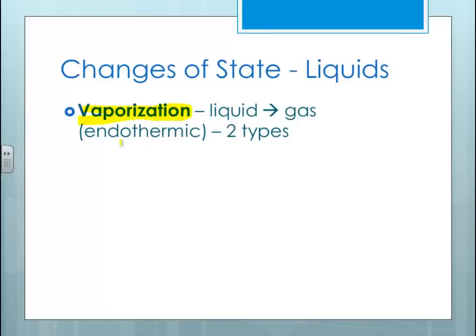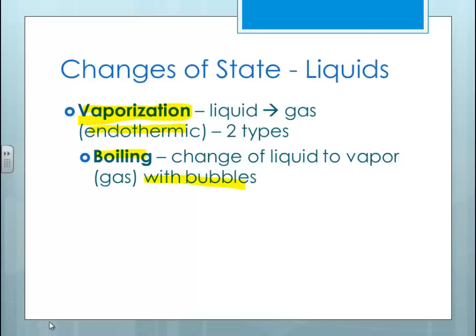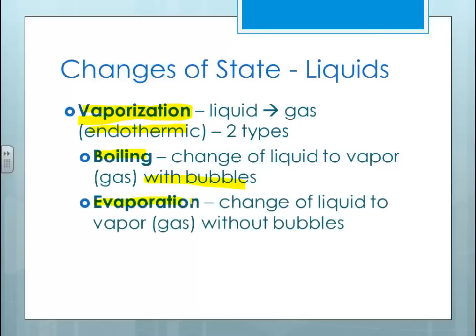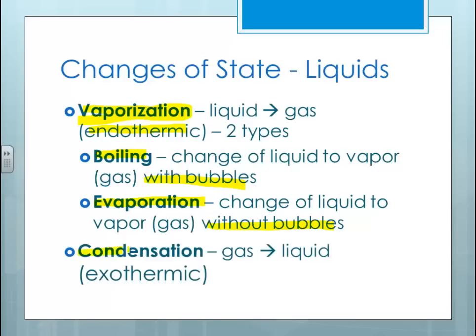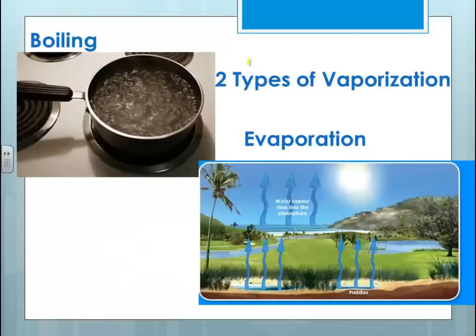Vaporization is when we go from a liquid to a gas — it is endothermic, and there are two types. Boiling involves bubbles, and evaporation is without bubbles. Both involve going from a liquid to a vapor or gas. The opposite is condensation, which is going from a gas to a liquid, and that is exothermic because it is losing heat.